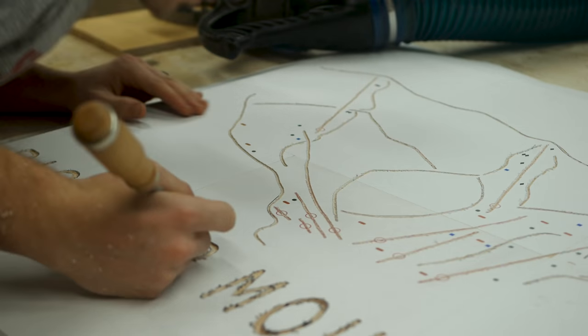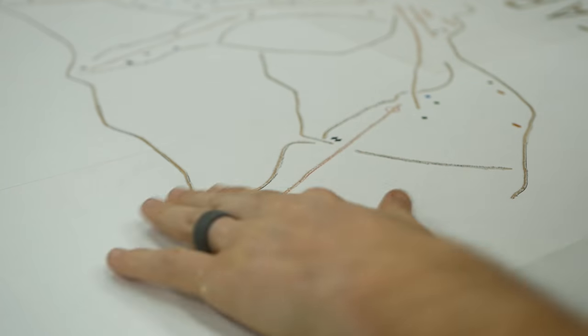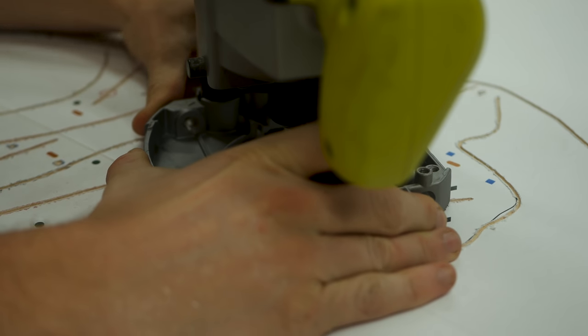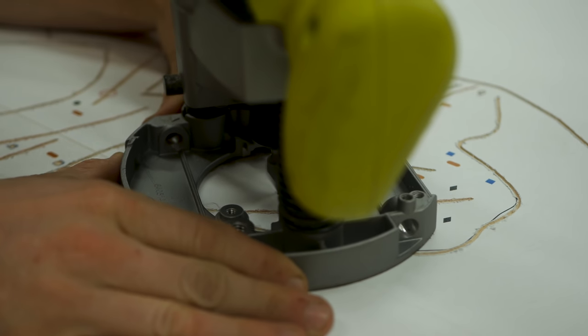After routing I used my thinnest chisel to run over every line to remove any of the excess shavings left over from the router passes. I then finished off the routing by adjusting the depth once more and routing out all the little trail symbols that usually populate a ski map.